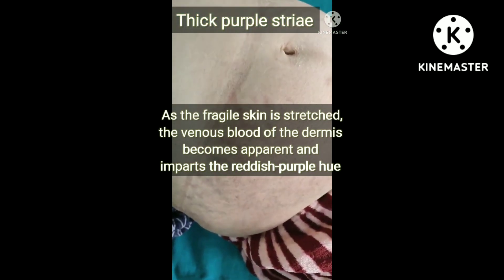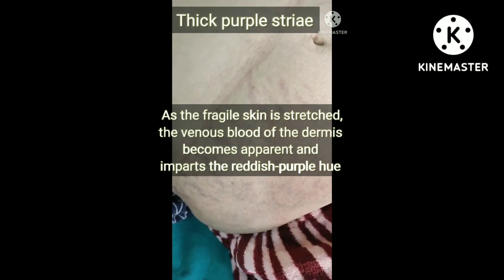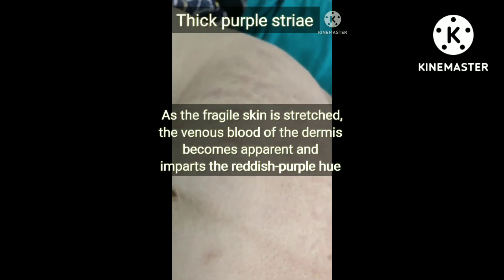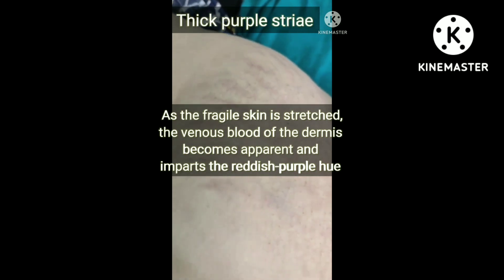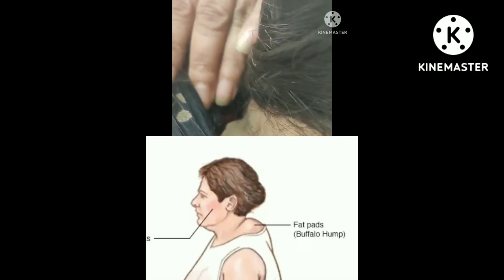There is abdominal obesity, insulin resistance, and acanthosis nigricans. There are also thick purple striae. The limbs are thin because cortisol causes proteolysis — breakdown of proteins — resulting in thin arms and legs. The skin is easily bruised.